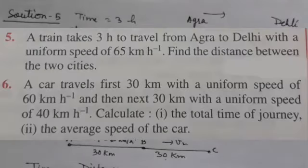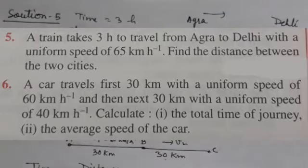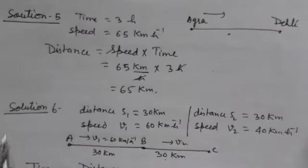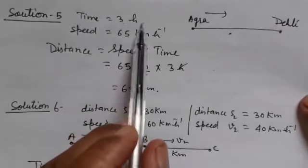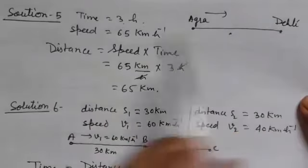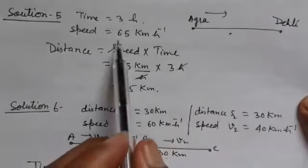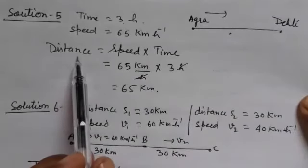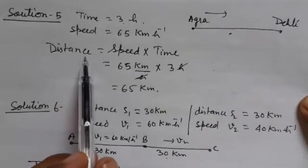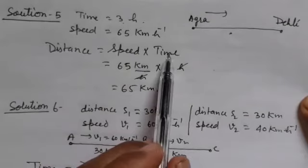Question number 5: A train takes 3 hours to travel from Agra to Delhi with a uniform speed of 65 km per hour. Find the distance between the two cities. Solution: Time is given as 3 hours, speed is 65 km per hour. Distance equals speed into time.